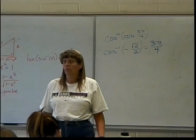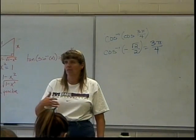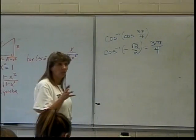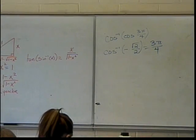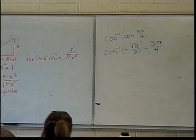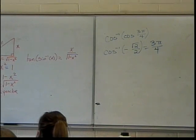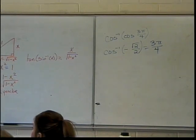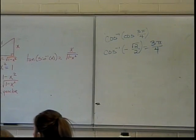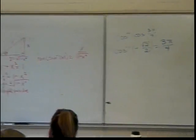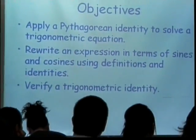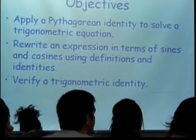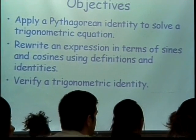Unfortunately, WebWork doesn't take things like that, so the WebWork problems are going to look a little funny, and I'll prepare you for that. The things we need to know in order to verify trig identities are some basic trig stuff. We need to be able to write the Pythagorean identities, and we need to be able to rewrite anything we have in terms of sines and cosines. Those are our two basic methods in this section for verifying trig identities.